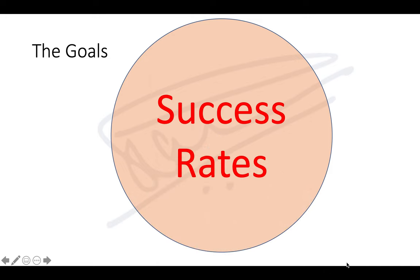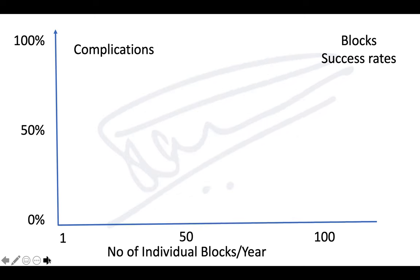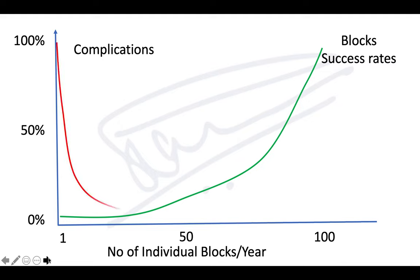Our main goals are to have high success rates with our nerve blocks, while keeping complication rates minimal — we cannot completely eliminate them. If you look at the number of individual blocks done per year, success rates go up when you perform around 90 blocks per year for each individual block. For example, to become an expert in femoral nerve block, you need approximately 90 blocks per year. As your success rate goes up, your complication rate comes down, almost to 0% at 90 to 100 blocks for individual nerves every year.